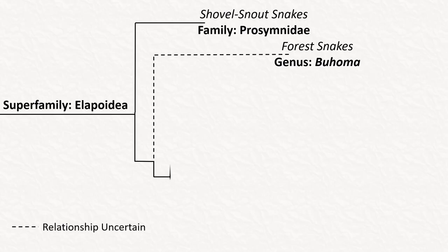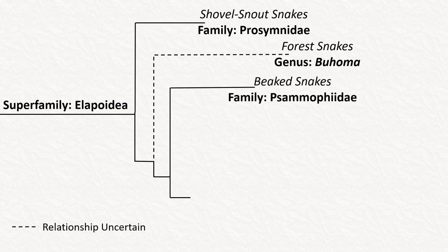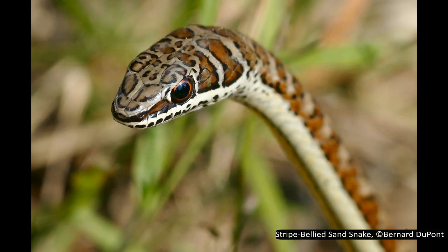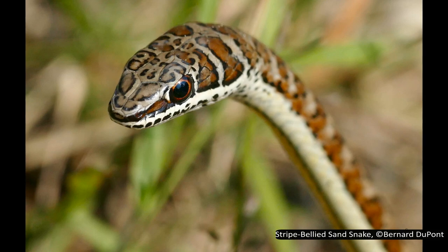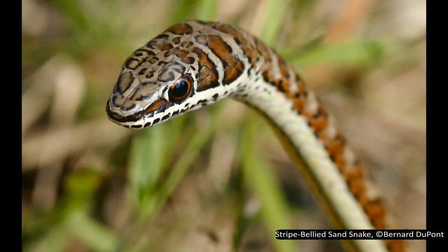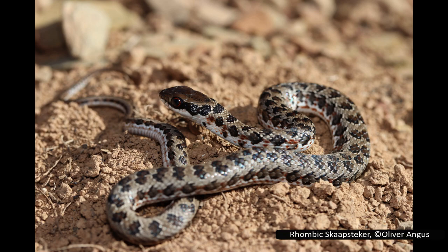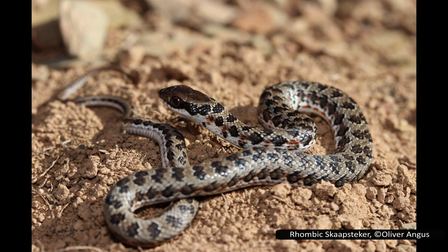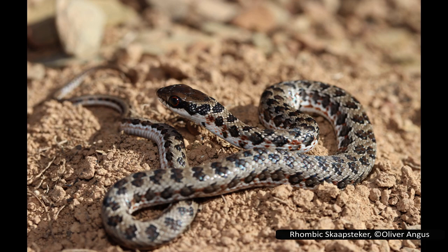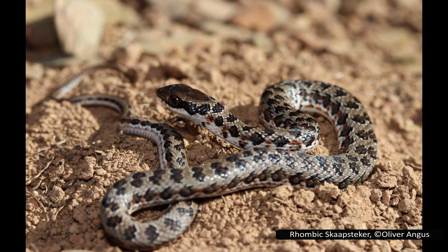The next family is Sibynophiidae, the sand snakes, which includes 57 species across 8 genera, with species throughout Africa and Asia as well as in southern Europe. They eat lizards, frogs, rodents, and birds, with exact preferred prey depending on the species. The snakes in this family are rear-fanged venomous. Like other rear-fanged snakes, they are typically not considered dangerous to humans, though if they do get a good bite on a human they can cause intense pain and swelling at the bite site. Most species are oviparous, though there is some evidence that species like the rhombic egg-eater use a strategy somewhere between oviparous and ovoviviparous.